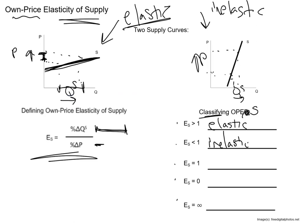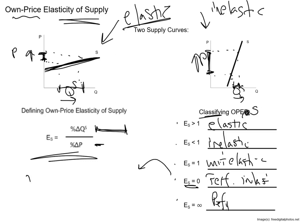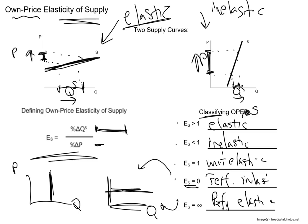For the inelastic steep supply curve, it took a huge increase in price, and producers were barely able to bring additional units to market. To finish the list: unit elastic is when it equals one. Perfectly inelastic supply is when the supply curve is perfectly vertical. Perfectly elastic supply is when the supply curve is perfectly flat.